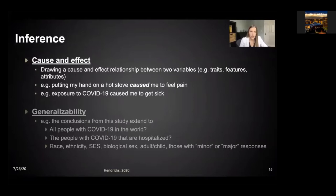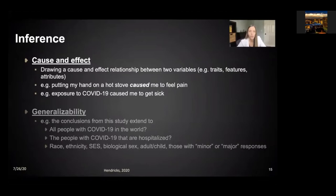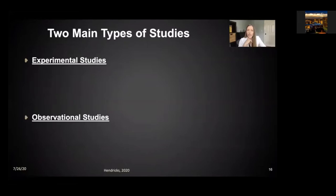Now I want to turn to the other side of inference in statistics: cause and effect. This is when we want to draw a cause-and-effect relationship between two variables, traits, or features. For instance, putting my hand on a hot stove caused me to feel pain; exposure to COVID-19 caused me to get sick. There are two main types of studies: experimental studies and observational studies.